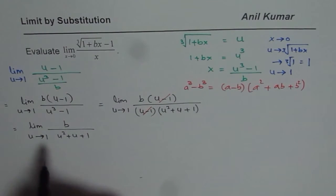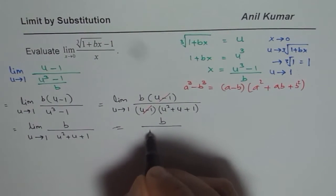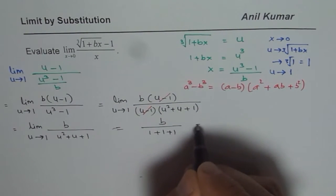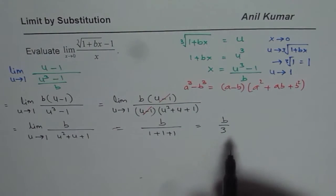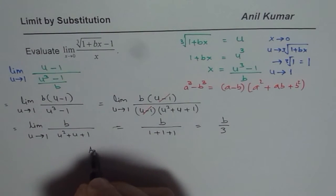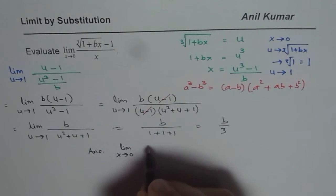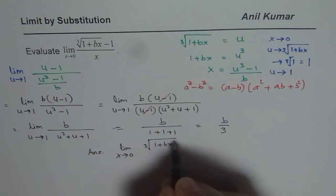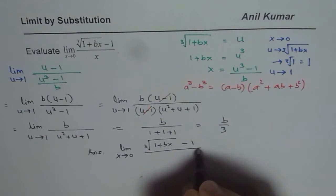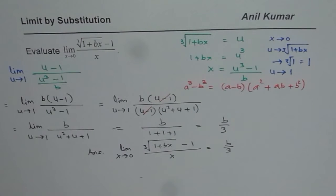Since u approaches 1 we can substitute this value. So we get b over 1 plus 1 plus 1 which is b over 3. Therefore the solution for this is b over 3. So we can say now our answer is limit x approaches 0 for cube root of 1 plus bx minus 1 over x equals b over 3.